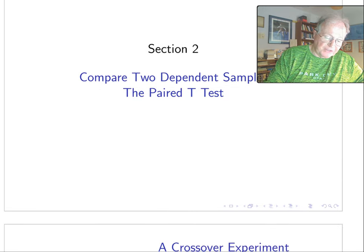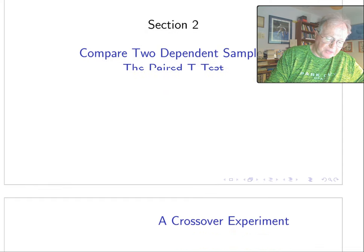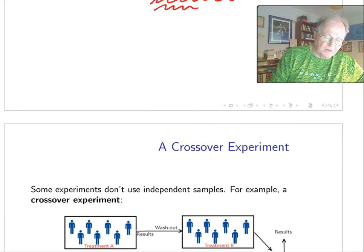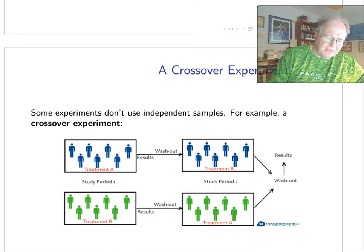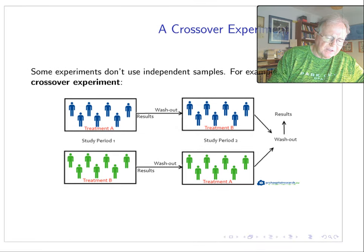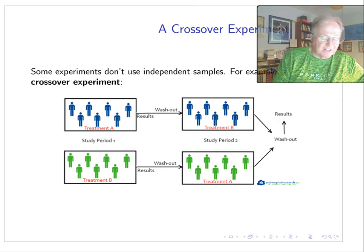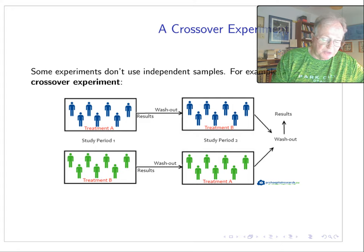Now there's another t-test for comparing dependent samples, and this one's known as the paired t-test. Okay, what's the idea here? The idea here is that measurements are not independent because measurements are taken from either the same subject or very, very similar subjects. A good example is a crossover experiment.